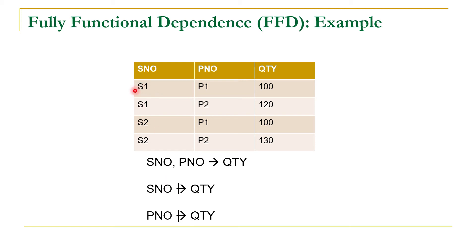So quantity should not be functionally dependent on these subsets. Let us check this: for a given value of supplier number S1, we are getting multiple values of quantity — 100 and 120 — so S number is not functionally determining quantity. The same is true for part number: for a given part number, we are getting multiple quantities. For example, for P2 we are getting multiple quantities, so part number is also not functionally determining quantity.